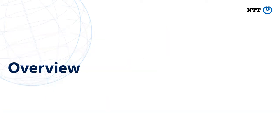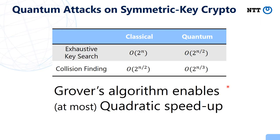First, I will explain an overview of our research. As you might know, by using Grover's quantum algorithm, we can obtain some speed-up on generic attacks on symmetric key cryptosystems. For example, the exhaustive key search on N-bit keys can be sped up from 2 to the power N in the classical setting to 2 to the power N over 2 in the quantum setting.